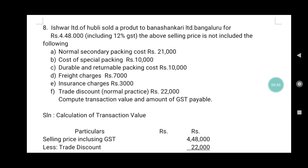So ₹4,48,000 — certain items are not included in the selling price. Number one: normal secondary package cost ₹21,000. Number two: cost of special packing ₹10,000. Number three: durable and returnable packing cost ₹10,000. Number four: freight charge ₹7,000. Number five: insurance charge ₹3,000. And trade discount ₹22,000.